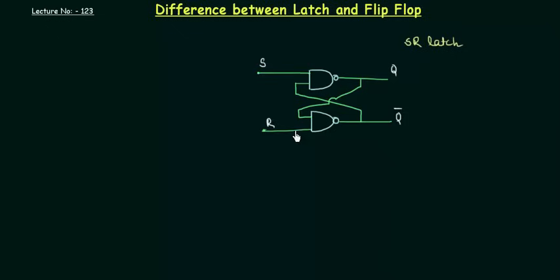So we need to introduce a control input by which we can decide when we have to change S or R, so that our output Q and Q complement will be stored until we have to use it. Let's see how we can introduce a control input to this circuit.